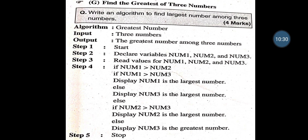Find the Greatest of 3 Numbers. Algorithm name is Greatest Number. Input is 3 numbers; output is the greatest among them. Step 1: Start. Step 2: Declare variables Num1, Num2 and Num3. Step 3: Read values for Num1, Num2 and Num3. Step 4: If Num1 > Num2, then if Num1 > Num3, display Num1 is greatest; else Num3 is largest. Else if Num2 > Num3, display Num2 is largest; else display Num3 is greatest. Step 5: Stop.